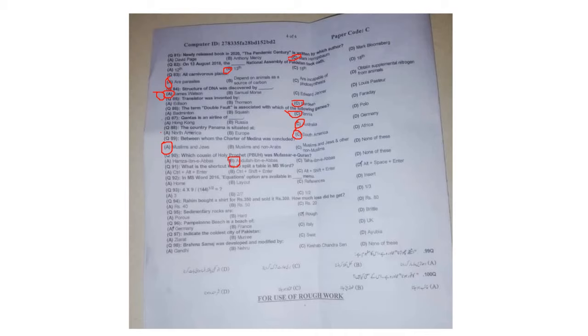Question 91: The shortcut key to split a table in MS Word is Ctrl + Shift + Enter. Question 92: In MS Word 2016, equations options are available in the Insert menu. Question 93: For the expression 4 divided by 9 divided by 144, the square root equals 3 — option A is the right answer. Question 94: Rahim bought a shirt for Rs. 350 and sold it for Rs. 300 — his loss was Rs. 50.